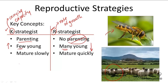K-strategists' offspring mature slowly, whereas R-strategists' offspring mature quickly, and again this goes back to parenting. K-strategists can parent their offspring until they're done maturing, giving their offspring a lot of time to develop. R-strategists don't have any parenting, so their offspring must mature quickly to learn how to survive by themselves in the environment.